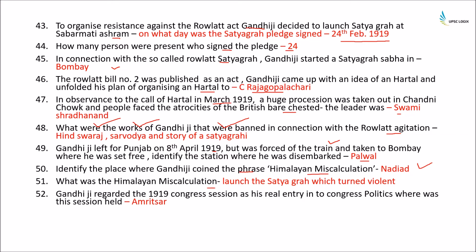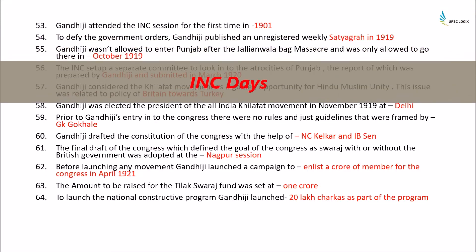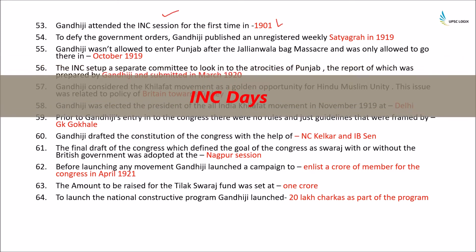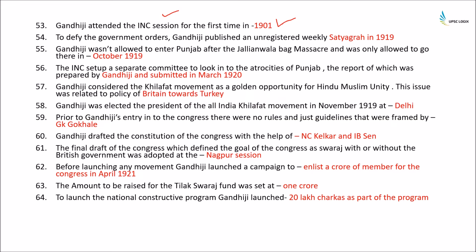Gandhiji regarded the 1919 Congress session as his real entry into Congress politics; this session was held at Amritsar. Although he had attended the first Congress session in 1901, his real entry into Congress politics was considered to be 1919. To defy government orders, Gandhiji published an unregistered weekly called Satyagraha in 1919. He was not allowed to enter Punjab after the Jallianwala Bagh massacre and was only allowed there after October 1919. The Indian National Congress set up a separate committee to look into the atrocities in Punjab, and the report was prepared by Gandhiji and submitted in March 1920.